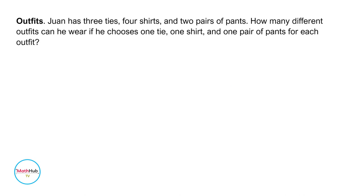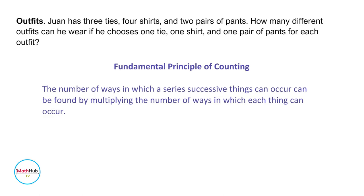This can be solved by using the basic counting principle. As a review, the basic counting principle says that the number of ways in which a series of successive things can occur is found by multiplying the number of ways in which each thing can occur.